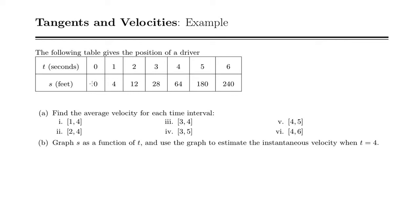We have a table of positions and times, the position of a driver, and we want to find these average velocities. So in general, average velocity is a position at time 2 minus position at time 1, that's the change in position, over the change in time, time 2 minus time 1.